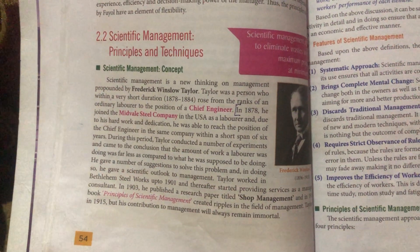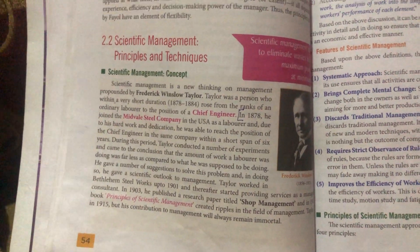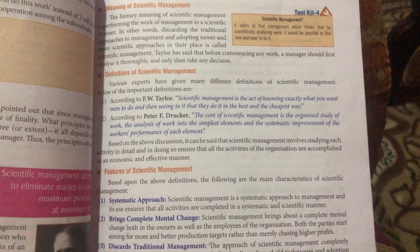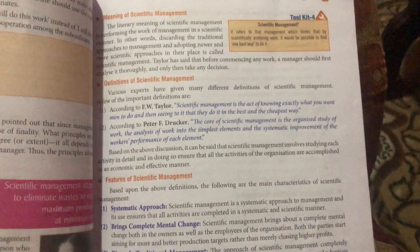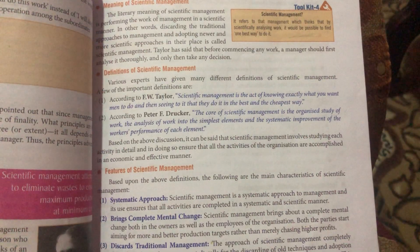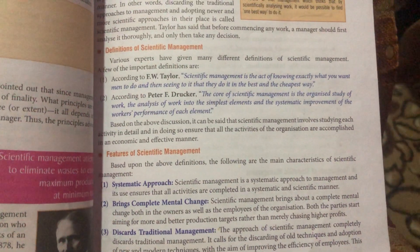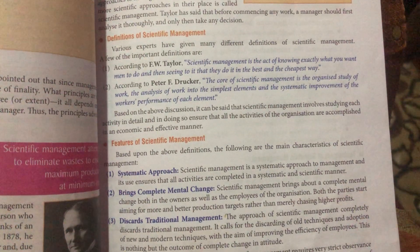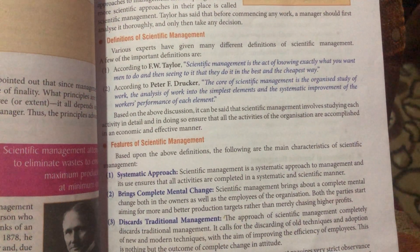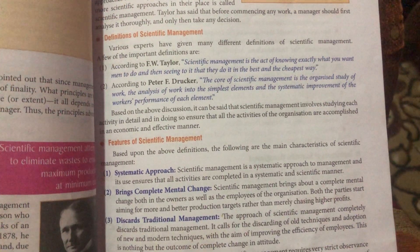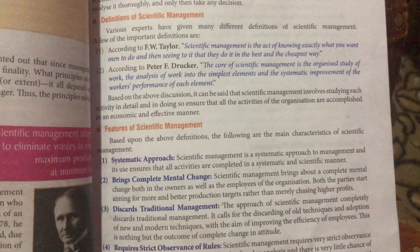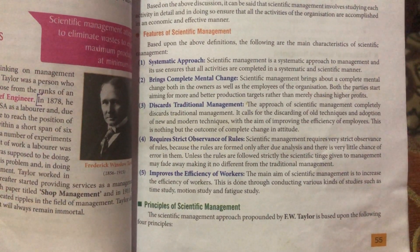The meaning of scientific management: scientific management comprises two words — first is 'scientific' and second is 'management.' Management means getting things done from others, and scientific means finding the best way among all available alternatives. F.W. Taylor defined scientific management as the art of knowing exactly what you want your men to do and seeing that they do it in the best and cheapest way.